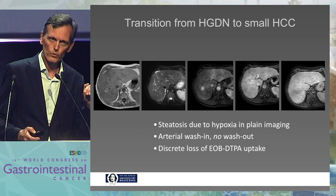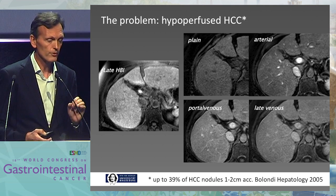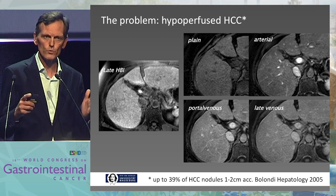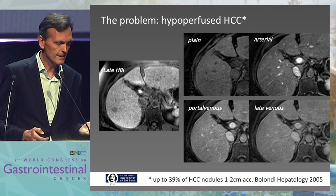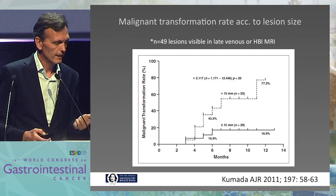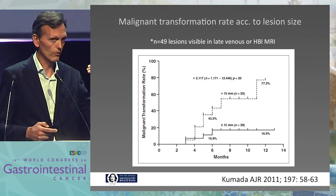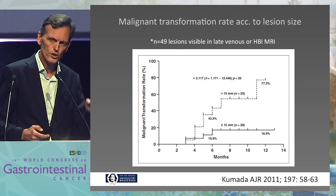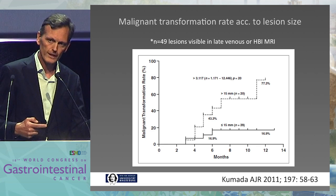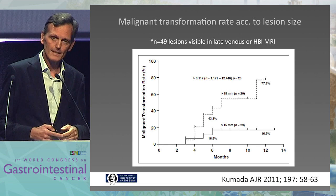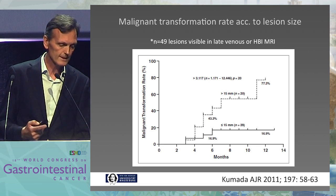This is a high-grade dysplastic nodule with hepatocellular carcinoma foci in it. Another example — our real problem: hypoperfused HCC. Up to 39% of HCCs are hypoperfused in the range of one to two centimeters, and they are only visible on the hepatobiliary contrast agent image. Clinical proof exists: a study of 49 lesions showed the fate of those non-hyperperfused, non-uptake tumors. If they are larger than 15 millimeters, the likelihood of being malignant and turning into hypervascularization is almost 80%. If smaller than 15 millimeters, the likelihood is only 16%.